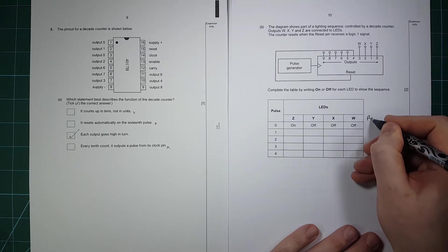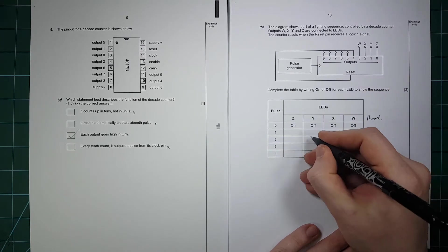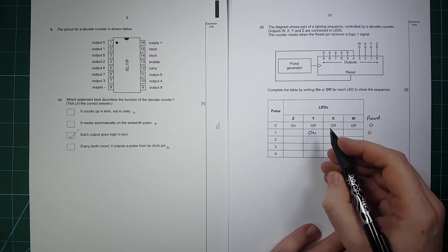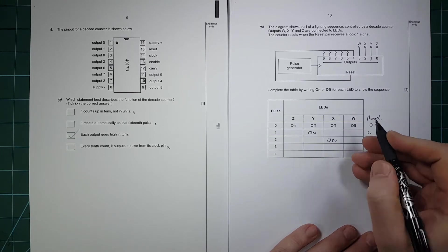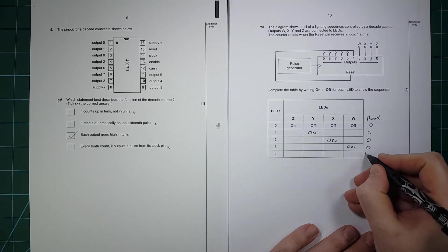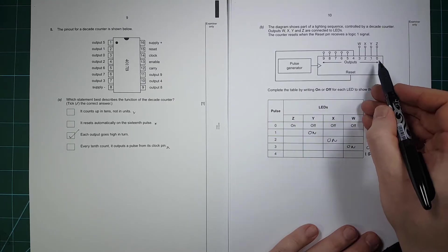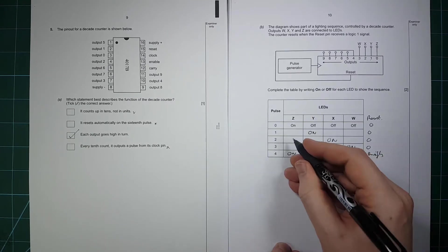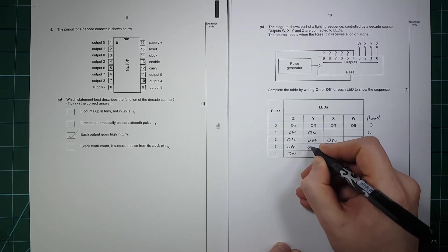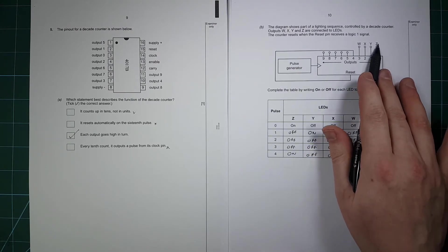Complete the table by writing on or off for each LED in the sequence. On the first pulse, output W goes on, and reset is zero. On the second pulse, X goes on, reset is zero. On the third pulse, Y goes on, reset is zero. On the fourth pulse, output 4 briefly goes to 1, which resets back to zero, and if it's at zero then Z comes on again. In all other cases they're off. Z comes back on because on pulse 4 it resets to zero, which turns Z back on.